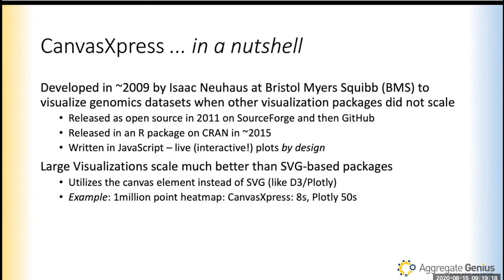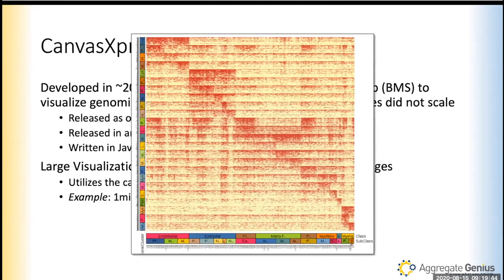There are a wide variety of charts — it's a very expansive package and new chart types are being added continually. In general, this package provides much better scaling than packages based on SVG graphics, because it utilizes the HTML canvas element. For example, a 1 million point heat map in Plotly takes about 50 seconds to render; in Canvas Express, it takes about 8 seconds. We will build a chart with some nice-sized data for this tutorial.